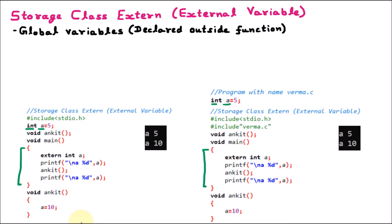Global variables or the external variables have global scope. Global scope means they are accessible everywhere. In the first example, we have declared one variable a with value 5. This variable a, if you want to access inside the main, it can be accessed. You can access it inside any function. Similarly, in the other example, we have the variable a, and accessing it inside main or inside any function is perfectly fine. So everywhere we can access it inside the program — this is called global scope.